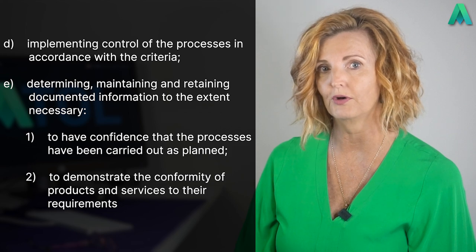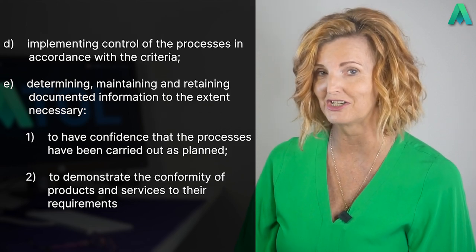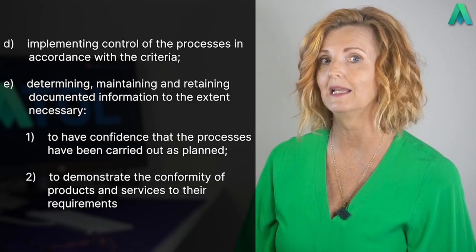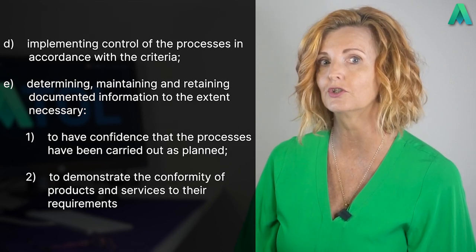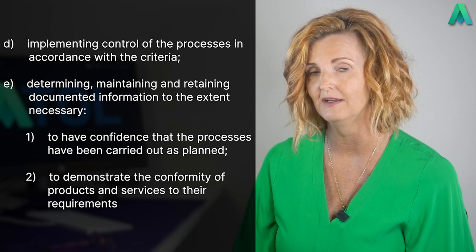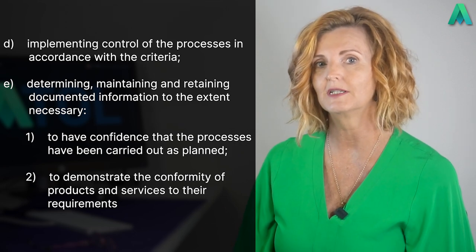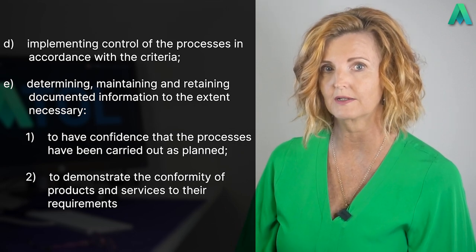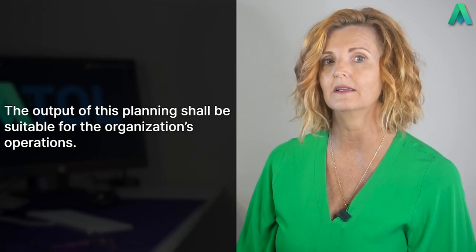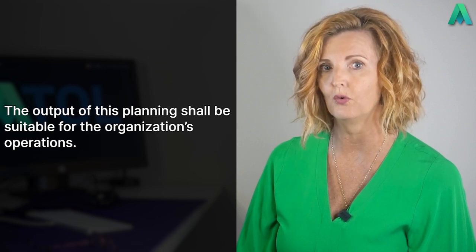This clause goes on to say: D — implementing control of the processes in accordance with the criteria; E — determining, maintaining, and retaining documented information to the extent necessary: one, to have confidence that the processes have been carried out as planned, and two, to demonstrate the conformity of products and services to their requirements. The output of this planning shall be suitable for the organization's operations. Documented information is an option for control of the processes at this operational level.